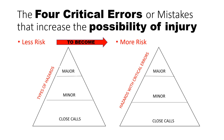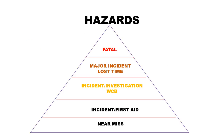Types of hazards are close cause, minor, and major, and that correlates directly with hazards that are close cause, minor, and major. As you can see by this hazard triangle, near misses are at the bottom, incidents and first aids are next, then incident investigations usually involving WCB or OHS, major incidents with lost time, and at the very top of the pyramid is fatalities.